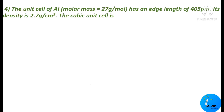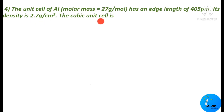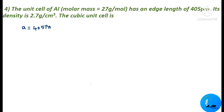Read the next problem. The unit cell of aluminium, whose molar mass is 27 g/mol, has an edge length of 405 pm and density 2.7 gram per centimeter cube. This is a different type of question — we are given molar mass, edge length, and density, and we must find which type of cubic unit cell it is: simple cubic, face centered, or body centered.